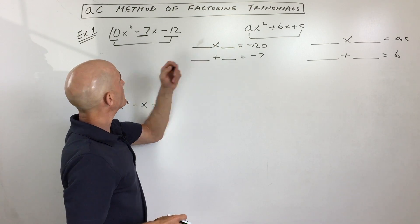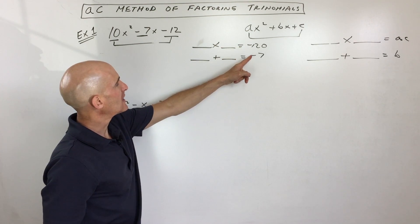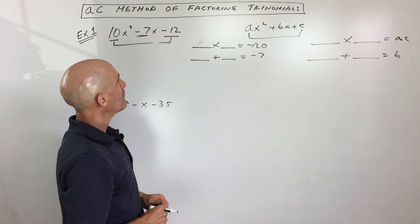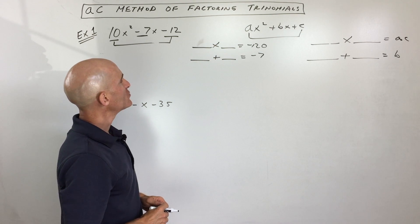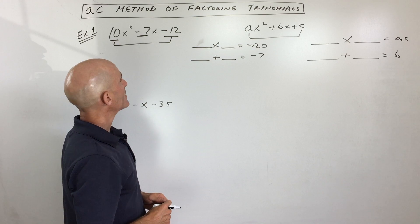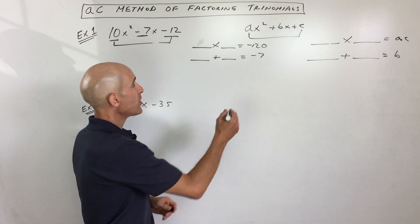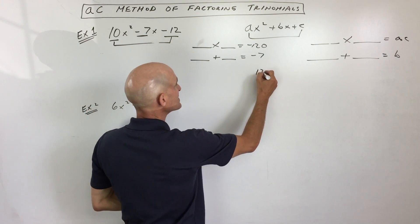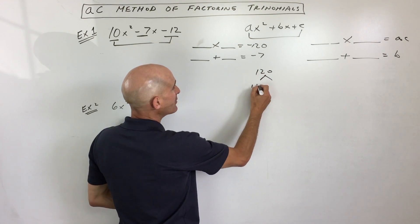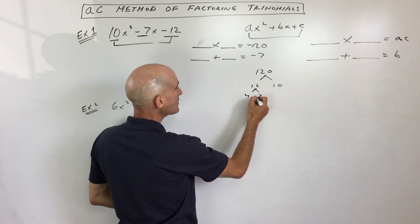When I look at this, I say to myself: they have to multiply to negative 120 but add to negative 7. Sometimes we have larger numbers like this. What I'll do — I'll show you my technique — is I'll take 120 and break it down into its prime factors.